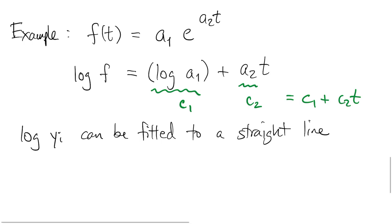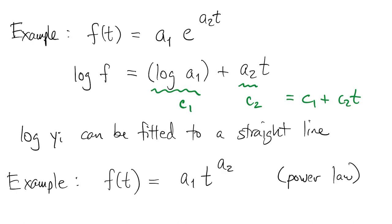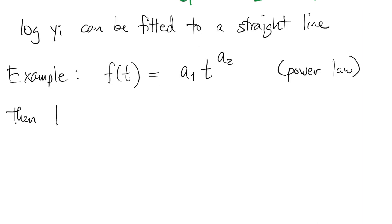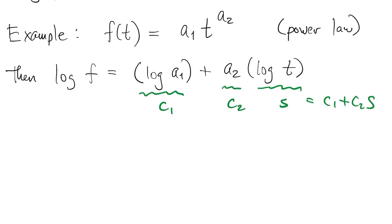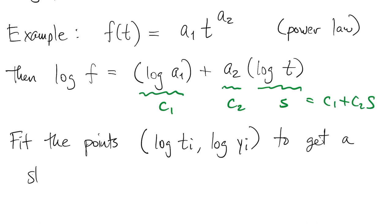Another common example is a power law dependence. In the power law, if we take the log of f, then we get a linear function of log t. So if you call that a new variable s, it's a linear function of s. So you fit the points where we take the log of both t and y and find a straight line for that. And then that tells us how to recover a1 and a2.